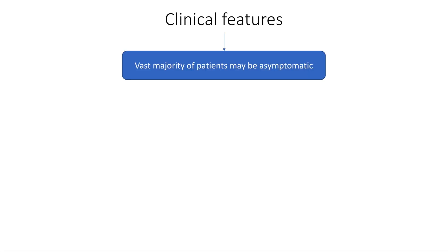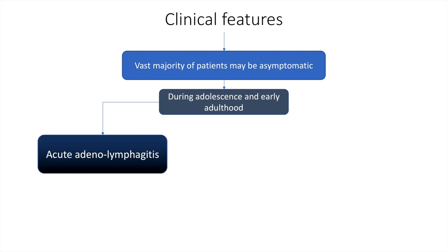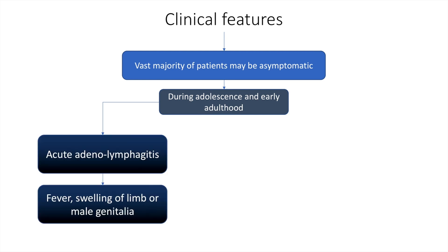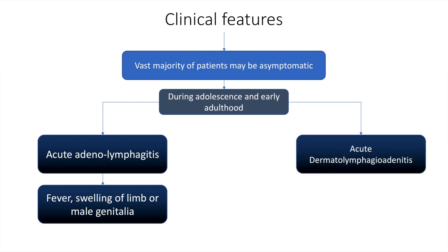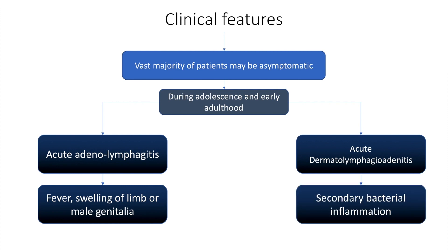The clinical features include a large majority of patients being asymptomatic. During adolescence or early adulthood, the patient may have acute adenolymphangitis, which presents with fever and swelling of the limb or male genitalia. The patient may also have acute dermatolymphangitis, which indicates a bacterial infection. This can be remembered by the fact that the bacteria enters from the skin — as depicted by dermato — followed by the lymphatics, followed by the gland. So bacterial infection in a case of filariasis is called acute dermatolymphangioadenitis.